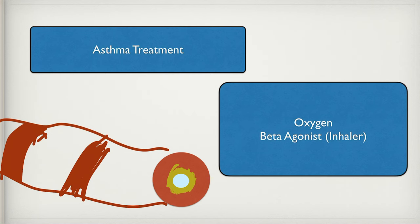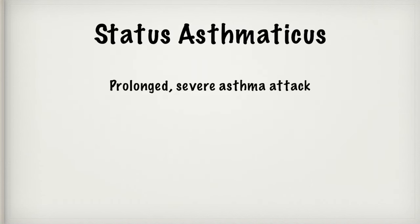In addition to oxygen, we're going to use a beta agonist — a medication like albuterol in their inhaler. Beta agonists are primarily beta two: remember beta one — you have one heart — so beta one causes the heart to beat faster and stronger. Beta two — you have two lungs — causes the lungs to work better and causes bronchodilation. With asthma you have bronchial constriction, and albuterol as a beta two agonist causes dilation. As EMTs, we're allowed to assist with their inhalers, but we cannot administer someone else's inhaler to our patient — it must be prescribed to the patient.